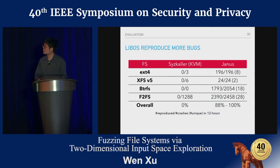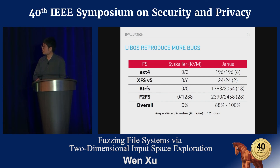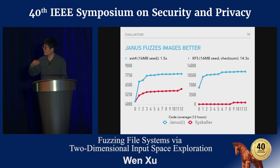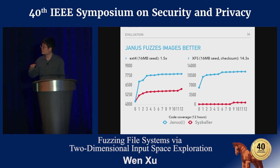For evaluation, first we wanted to see if using a library OS is really better than fuzzing a VM. Running for 12 hours on four file systems, Janus can reproduce most of the bugs after fuzzing, while syzkaller fails to reproduce any of its found crashes. We also compared image mutation: fixing the syscall payload, Janus performs 1.5 times better than syzkaller on ext4 and much better on XFS — because XFS has checksums and syzkaller just mutates raw data, so its coverage is quite low.